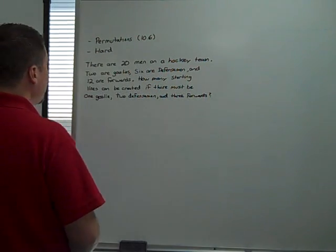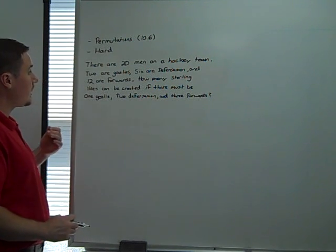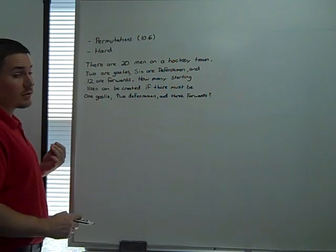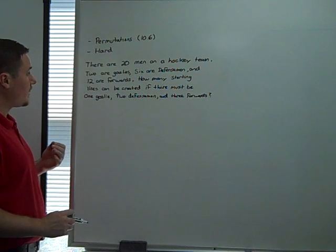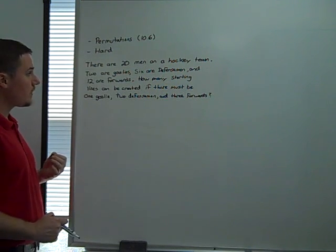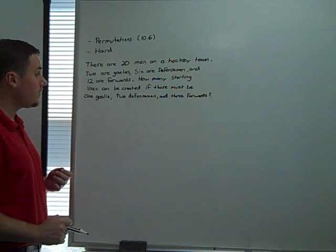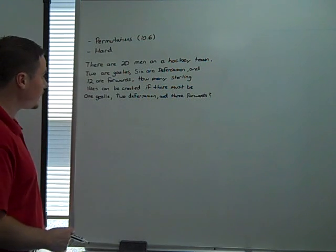All right, for the final question on permutations of hard difficulty, I'm going to use a sports reference. There are 20 men on a hockey team. Two are goalies, six are defensemen, and 12 are forwards. How many starting lines can be created if there must be one goalie, two defensemen, and three forwards on the ice?